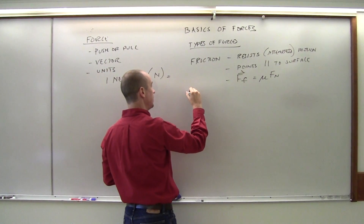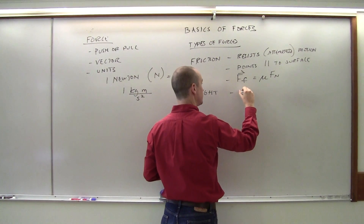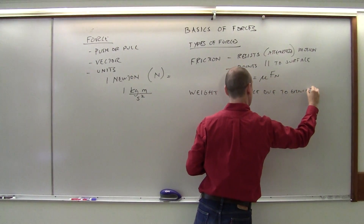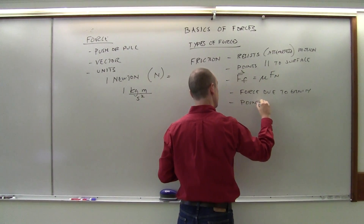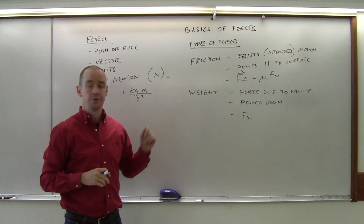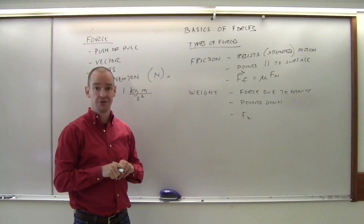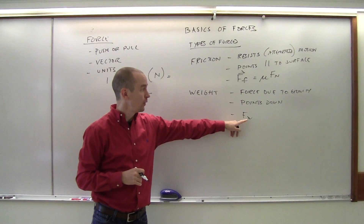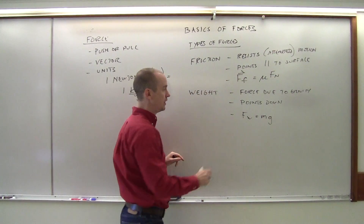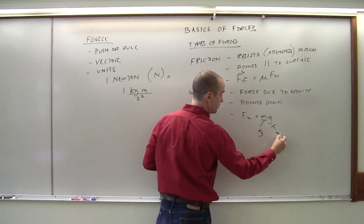Another force you might encounter is the force of weight. The force of weight is due to gravity — it points straight down. Later when we learn about the universal law of gravitation we'll see it's slightly different. For right now, the force of weight, F subscript W, is equal to mass times the acceleration of gravity. Mass is in kilograms, acceleration of gravity in meters per second squared.